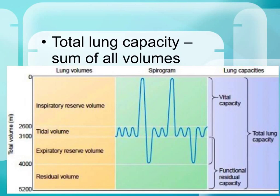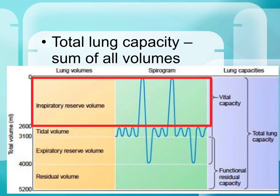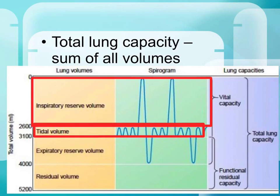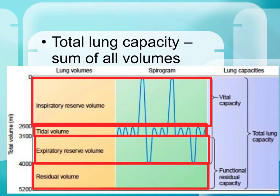Total lung capacity is the inspiratory reserve volume, the tidal volume, plus the expiratory reserve volume, and the residual volume — all of the volumes added together. That equals the total lung capacity.